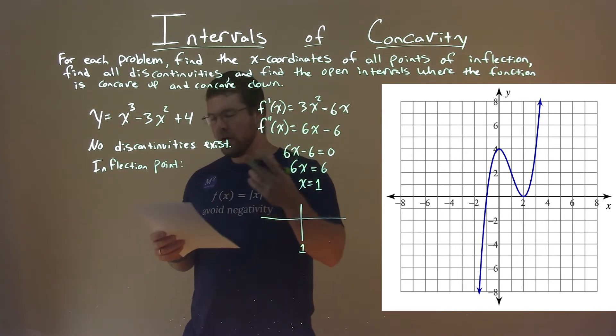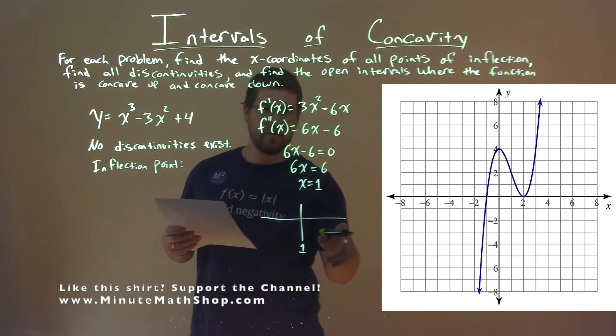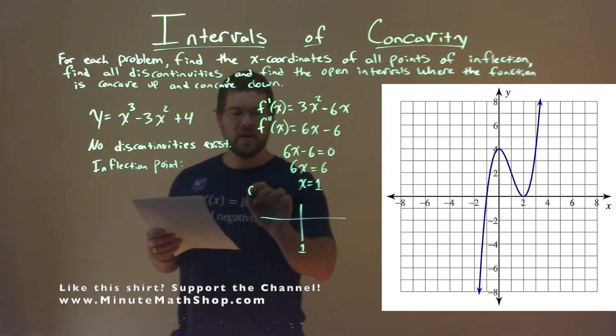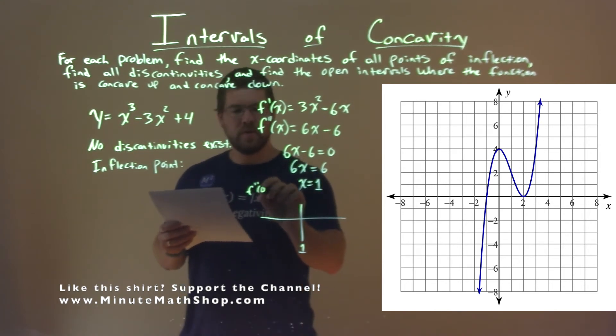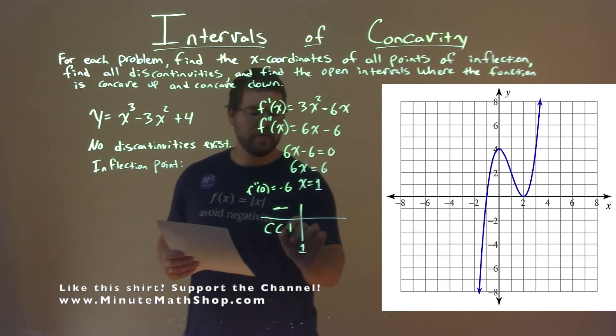And we plug it into our second derivative, and we find a value less than 1 and greater than 1. This is our second derivative test. So, f''(x) of a value less than 1, I chose 0, and I got negative 6. All I care is that it's negative, and that means we're concave down here.